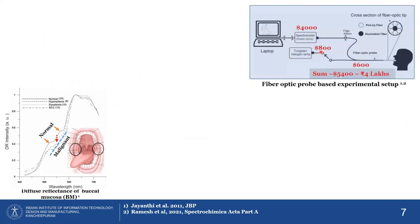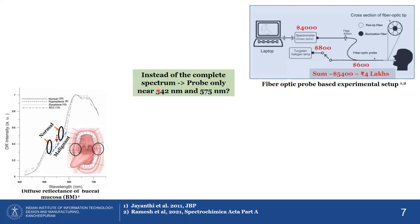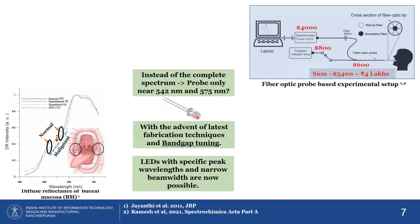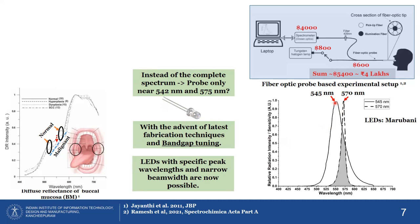Looking at the complete setup, the spectrometer costs around $4,000, the halogen lamp around $800, and the optical fiber around $600 — the complete cost is around $5,400, which is approximately four lakhs INR. This is very costly. Since we are only interested in 545 and 575 nanometers, why look at the whole spectrum? With advances in LED fabrication, we can now use very narrow-bandwidth LEDs, such as 545 nm and 570 nm LEDs.